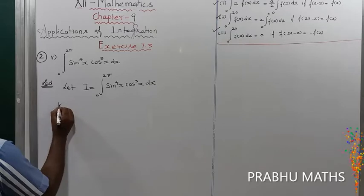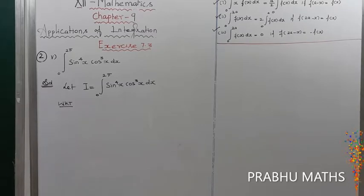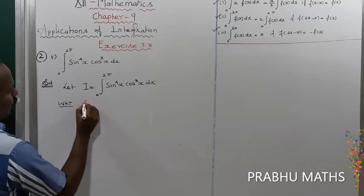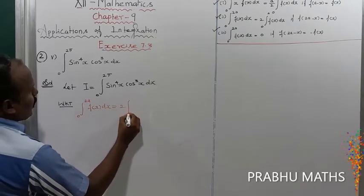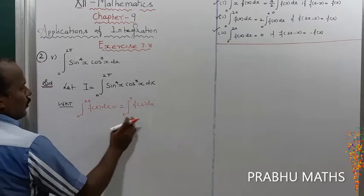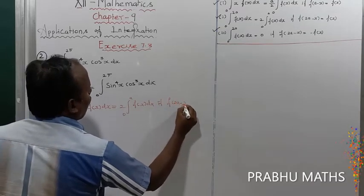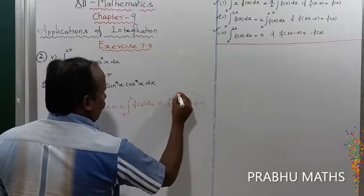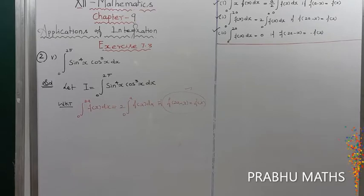By using the formula: the integral of 0 to 2a of f(x) dx equals 2 times the integral of 0 to a of f(x) dx. This formula applies only when the condition f(2a - x) = f(x) is satisfied.